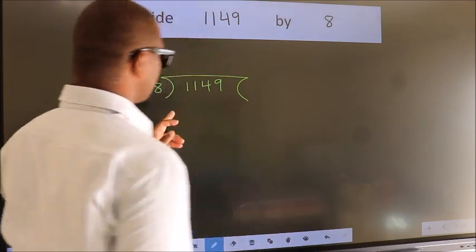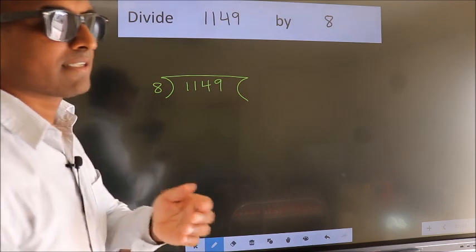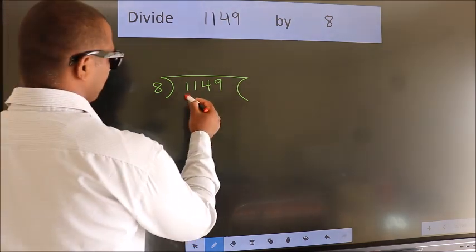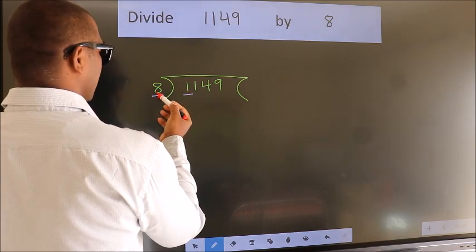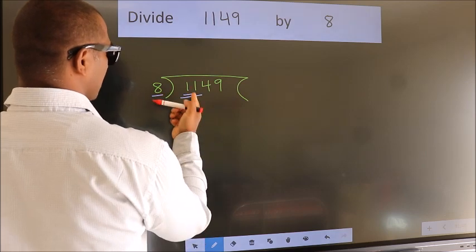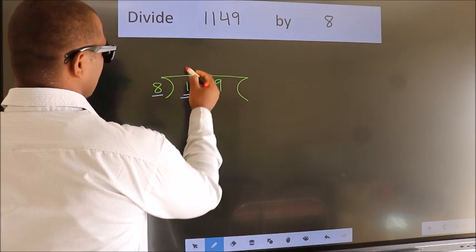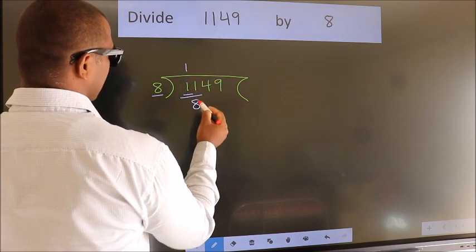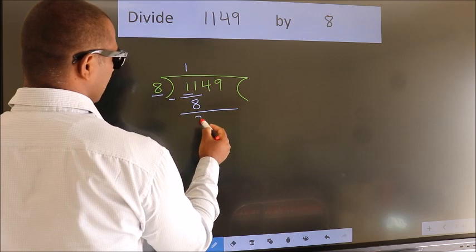This is your step 1. Next, here we have 1, here 8, 1 smaller than 8. So, we should take 2 numbers, 11. A number close to 11 in 8 table is 8 once, 8. Now, we should subtract. We get 3.